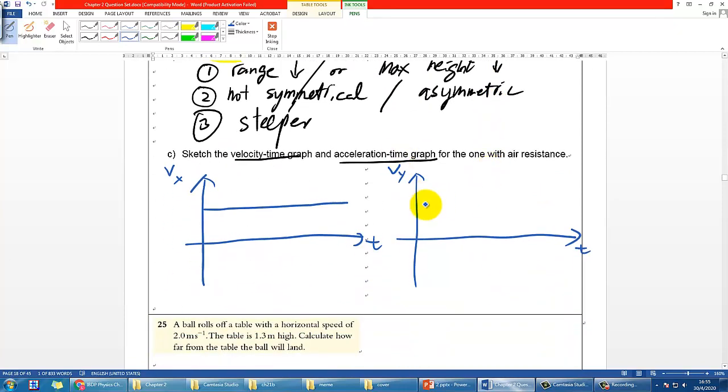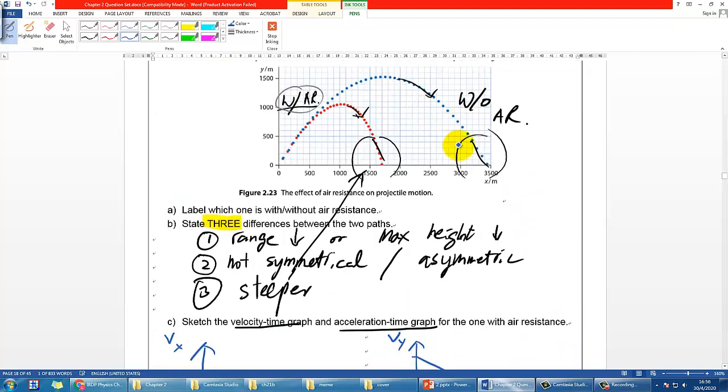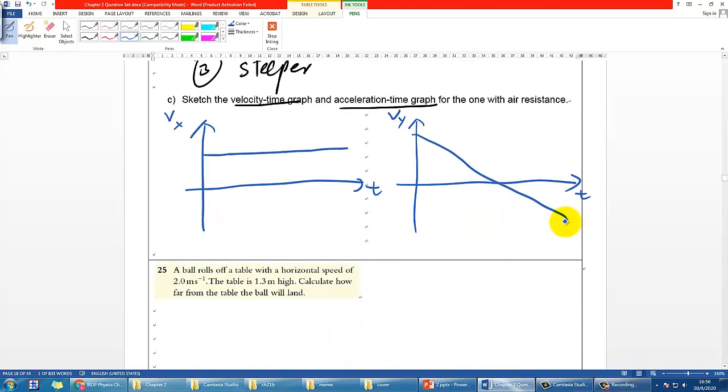For vy, let's say upward is positive. We will have a certain positive value at the beginning referring to the fact that it's going up, and then it will hit zero when it goes to the highest point, and then go to negative later on. So this is how it should look like without air resistance. Now I would like you to pause the video, try it out, and let's check the answer together afterwards.